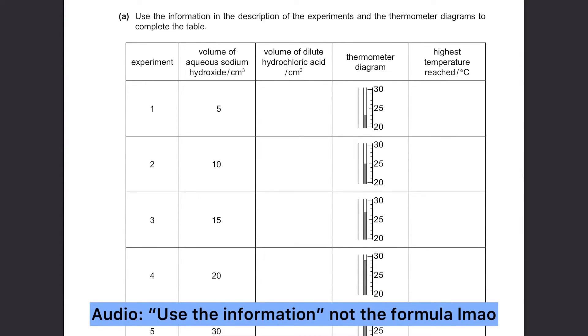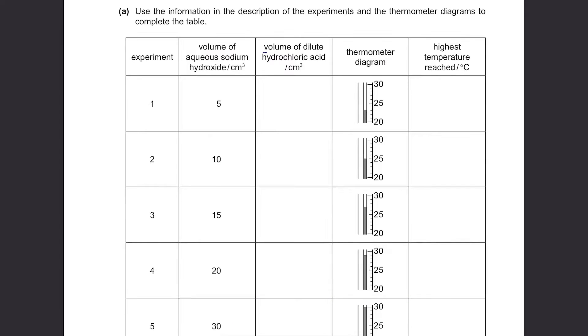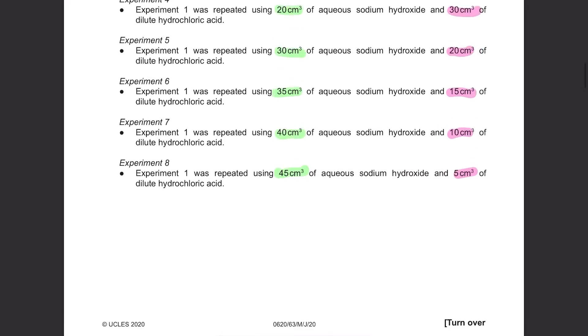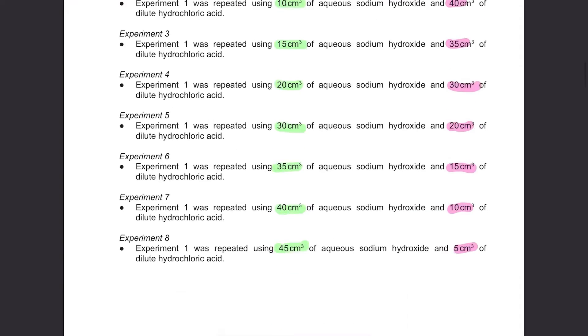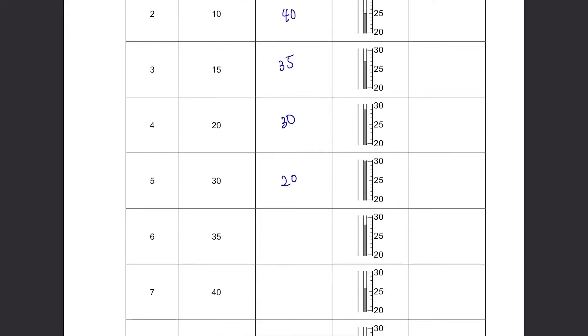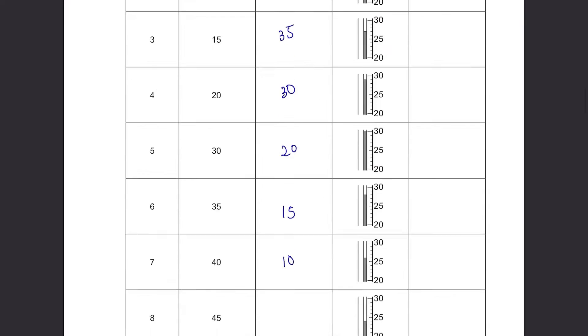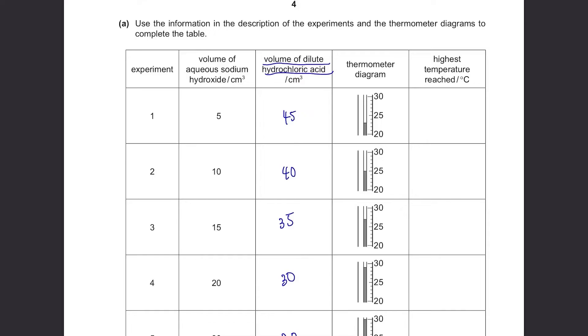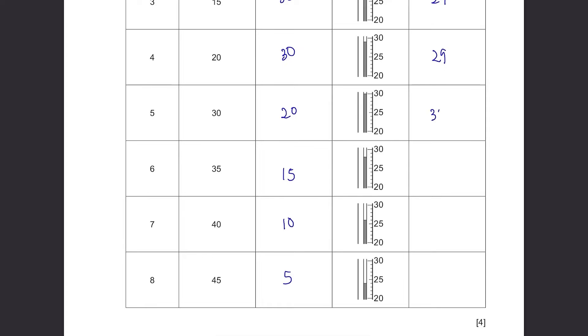Part A: Use the formula in the description and the thermometer diagrams to complete the table. Volume of dilute hydrochloric acid, you just have to copy that down from 45 to 5. Then the highest temperature reached, just read the thermometer diagram. It's 23, 25, 27, 29, 30, 28, 26, and 24.